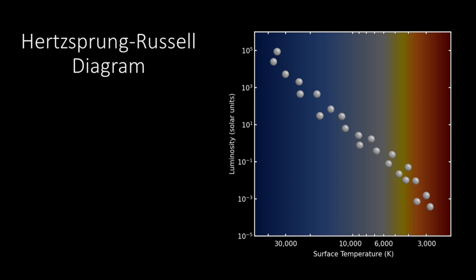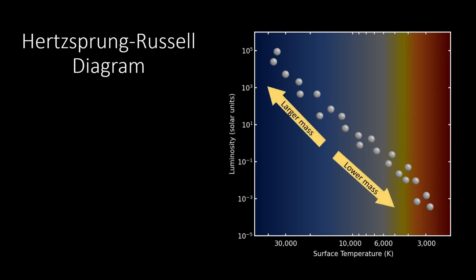The models of stellar formation and evolution indicate that when a star is formed, it takes its place at one spot in the main sequence at a location that depends on the star's initial mass. Stars with larger mass are located higher in the main sequence, while low-mass stars are located in the lower portion.